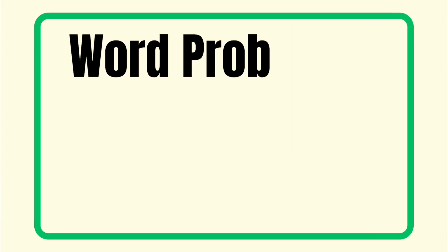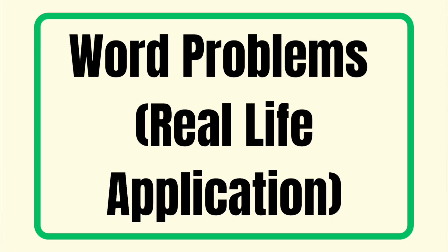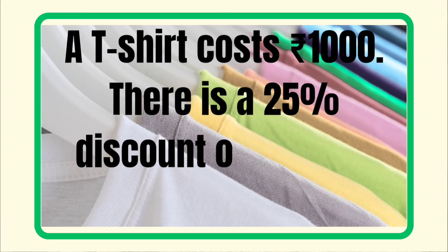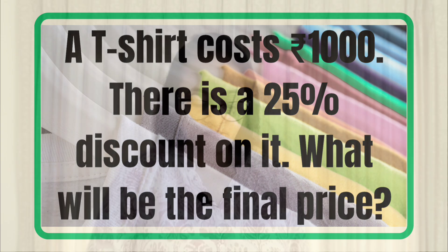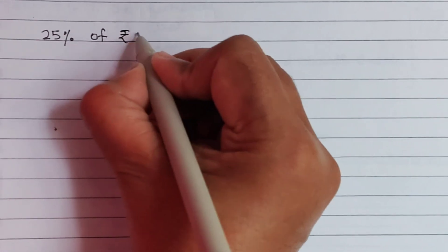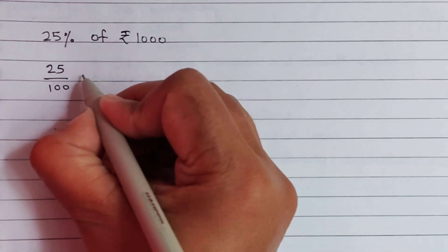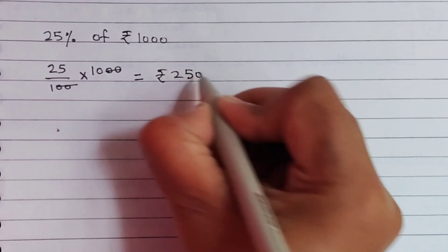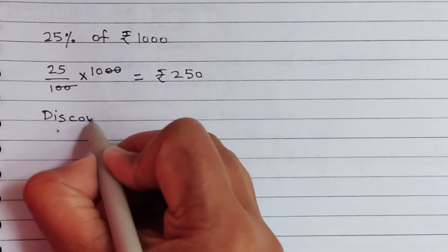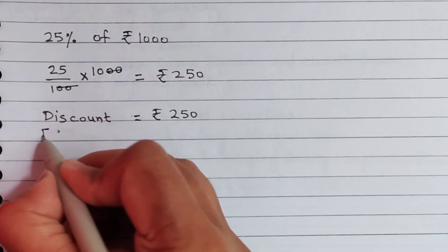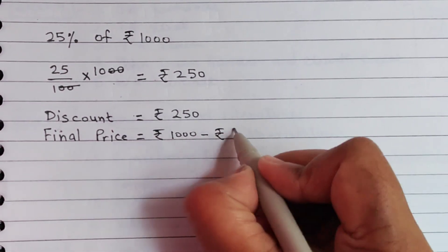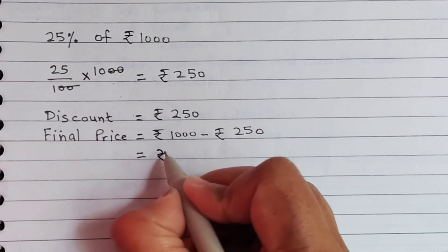Now let's take some word problems. Word problems are real-life situations where we use percentage. First word problem: a T-shirt costs 1000 rupees and there is a 25% discount on it. What will be the final price? First, find 25% of 1000 rupees: 25/100 × 1000 — cancel zeros, 25 × 10 equals 250 rupees discount. Now subtract 250 from 1000, which equals 750 rupees. So the final price is 750 rupees — great deal, right?